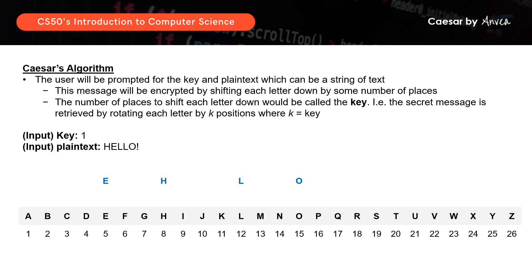If the key is 1, we will shift down each letter by one position. So shifting H down by one gives I, E becomes F, L becomes M, and O becomes P. The resulting ciphertext will then be I, F, M, and P.